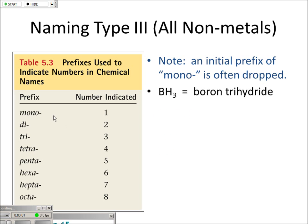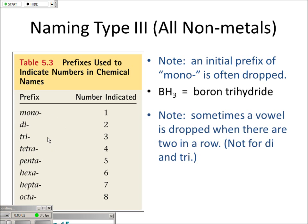The only really big trick here is that 'mono' is dropped if it's in front of the first element. So instead of calling this monoboron trihydride, we just call it boron trihydride. But I have to add the word 'tri,' because otherwise I really don't know what's going on — I don't know that there are three H's to one boron unless I add the tri.